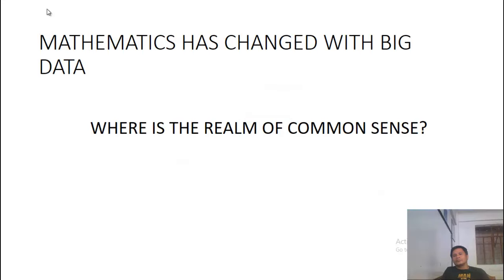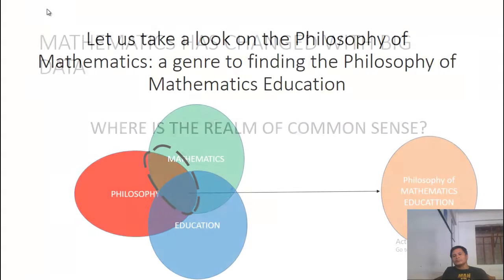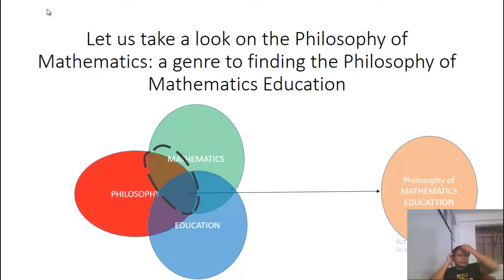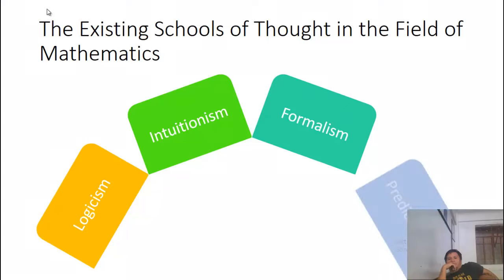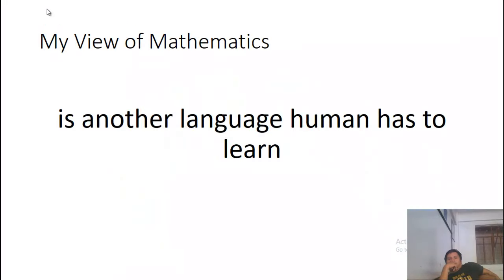Mathematics has changed with big data. Where is the realm of common sense when everything is searched within fingertips? Let us take a look at the philosophy of mathematics, the genre defining the philosophy of mathematics education. The existing schools of thought in the field of mathematics: one, logicism; two, intuitionism; three, formalism; four, predicativism. My view of mathematics is another language humans have to learn.